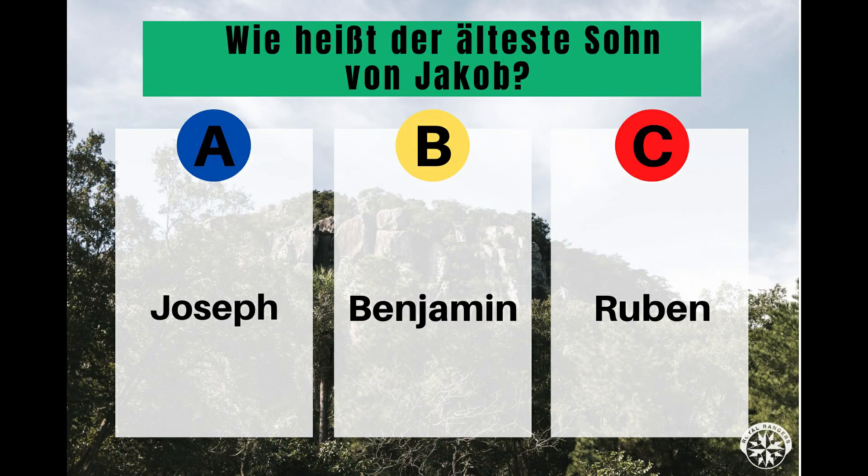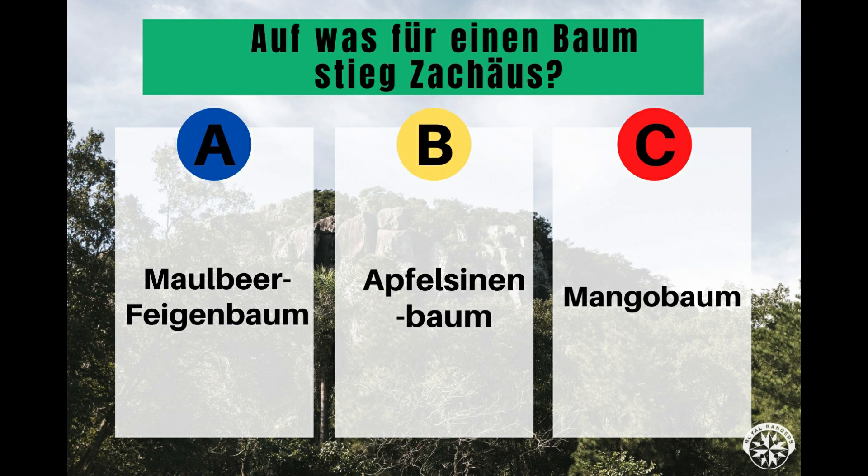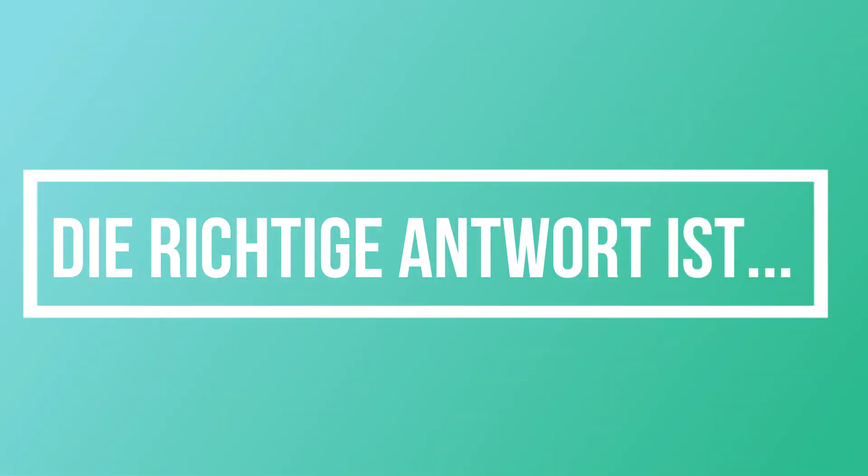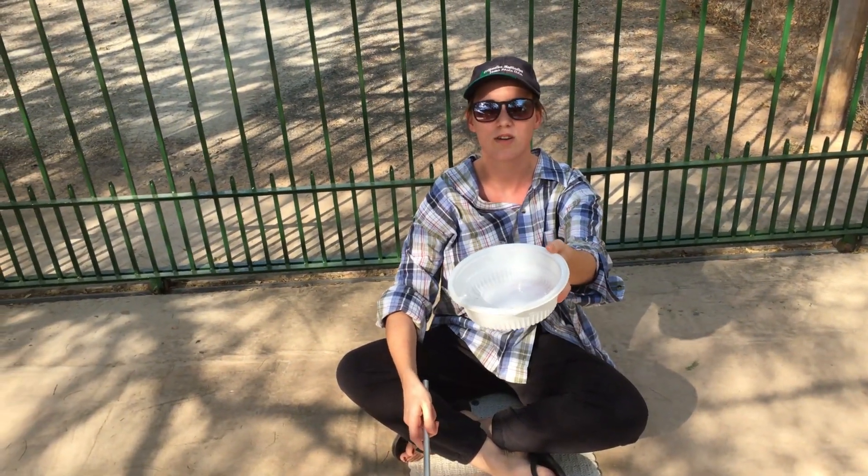Wie heißt der älteste Sohn von Jakob? Auf was für einen Baum stieg Zachäus? Hey, ist da jemand? Hey, du da! Bitte gib mir was! Ich bin der blinde Bettler von den Toren Jerichos. Weißt du, wie ich heiße?